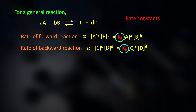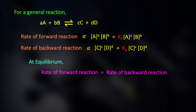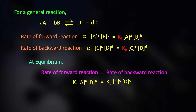At equilibrium, the rate of conversion of reactants into products is equal to the rate of dissociation of the products into reactants. The rate at which products are formed equals the rate at which products are dissociated. Therefore, at equilibrium, the rate of the forward reaction is equal to the rate of the backward reaction.